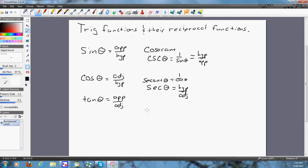And the last one is going to be the cotangent of theta, which is going to equal one over the tangent of theta. And so therefore, cotangent of theta is equal to the adjacent over opposite.